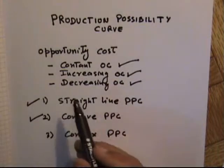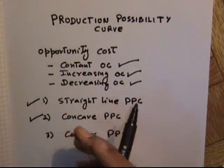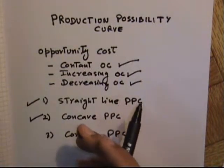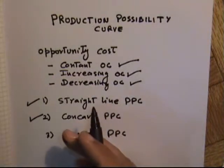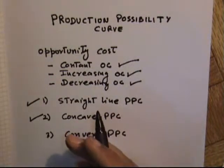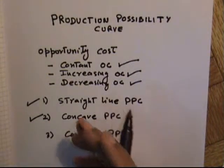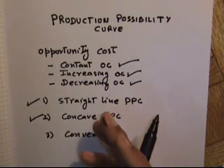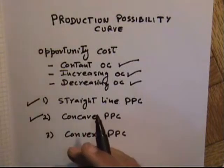The Production Possibility Curve shows how many goods and services an economy is capable of producing, which is determined by the quantity and quality of resources available, together with the state of technology. These factors determine a country's production possibilities.